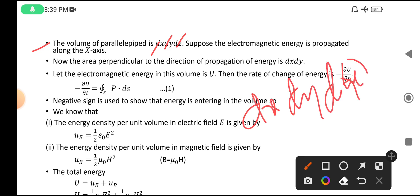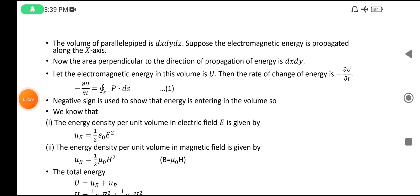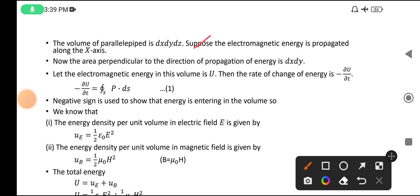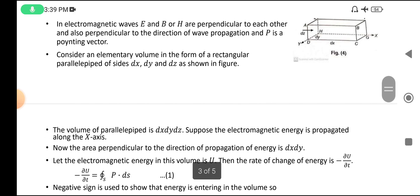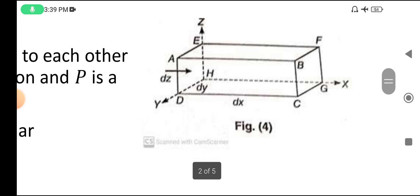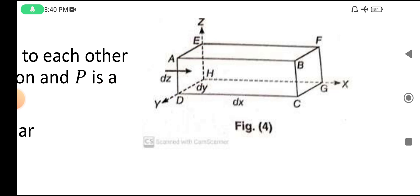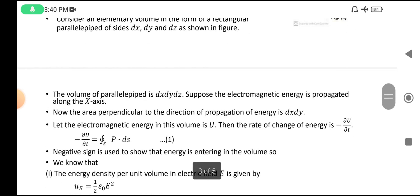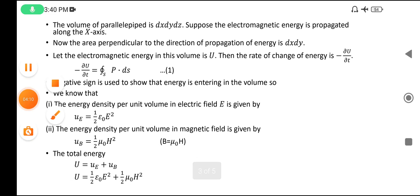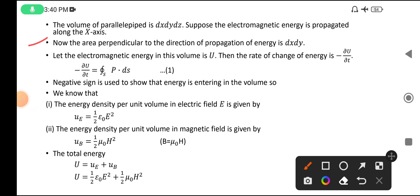Suppose the electromagnetic energy is propagated along the x direction. The electromagnetic wave is propagating along the x direction, and through this face the area perpendicular to the direction of propagation is dy × dz.